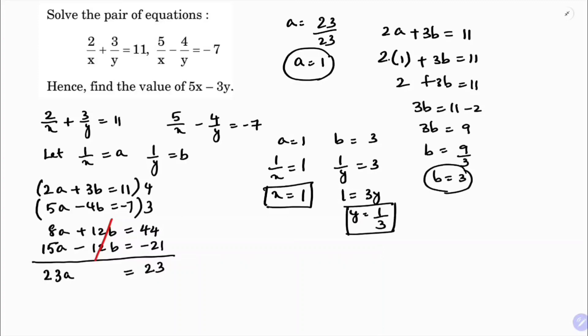Now we need to find 5x - 3y. Substituting: 5(1) - 3(1/3) = 5 - 1 = 4. Therefore, 5x - 3y = 4.